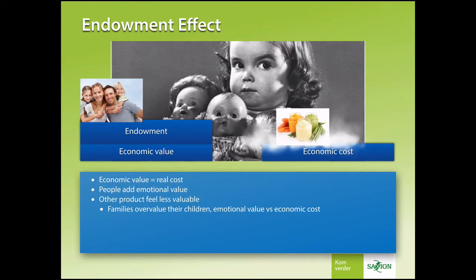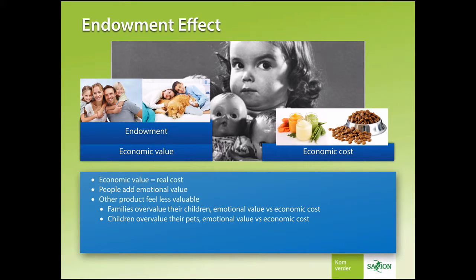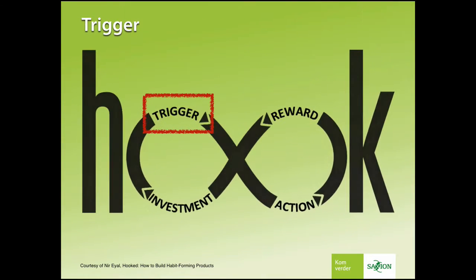We humans add personal value to items we own. If another person has the same item, it feels less valuable than your own. Imagine buying a child from a family — you have to pay more than just the economic cost. If your dog has puppies and you want to sell one, the children will oppose because the puppy has more value to them than just economic costs. Endowment also applies to gamers: they will overvalue everything they own, earned, or buy inside of a game. With our basic knowledge of games, we can now start with the hook system.